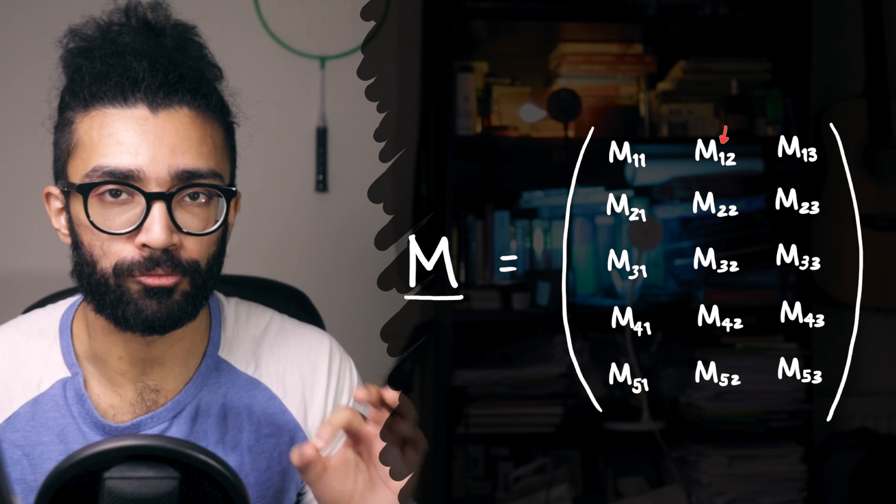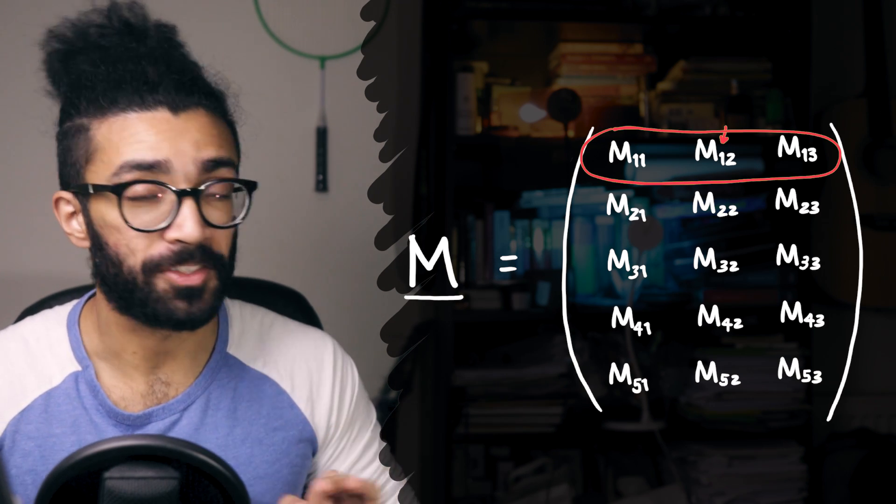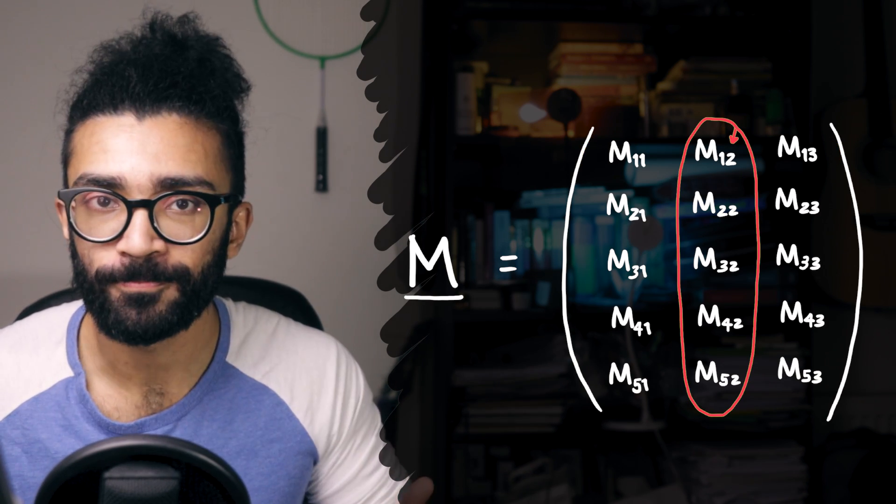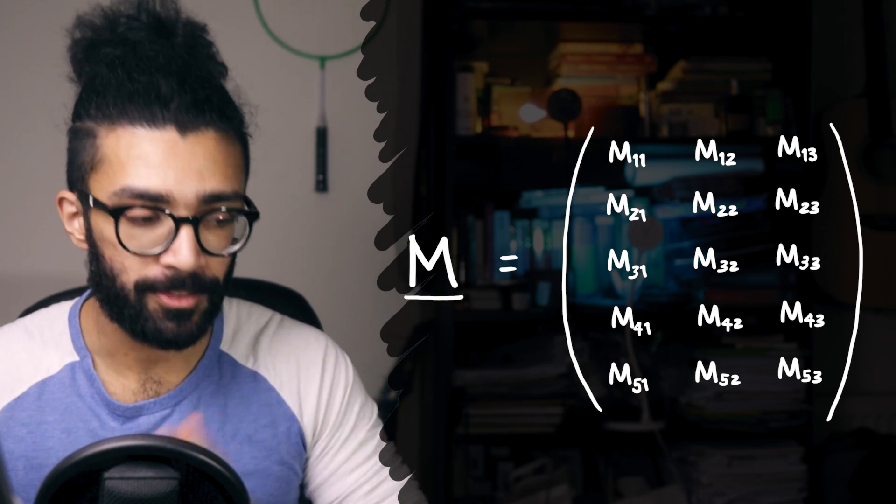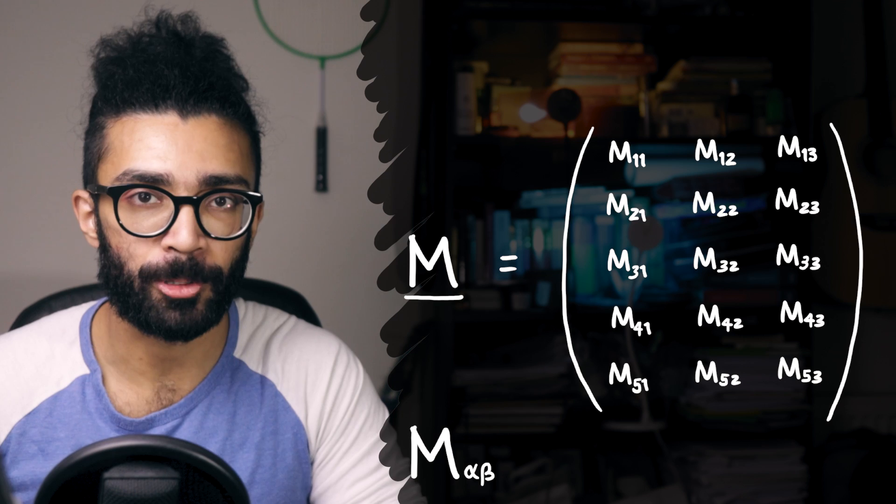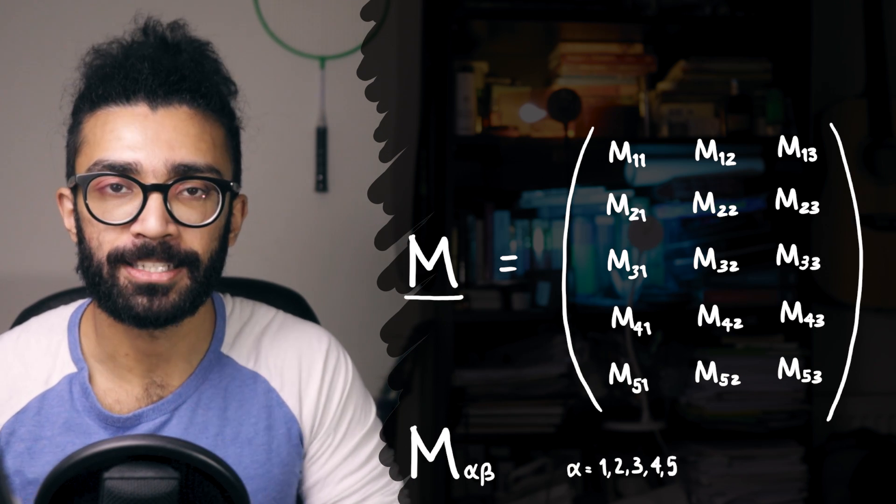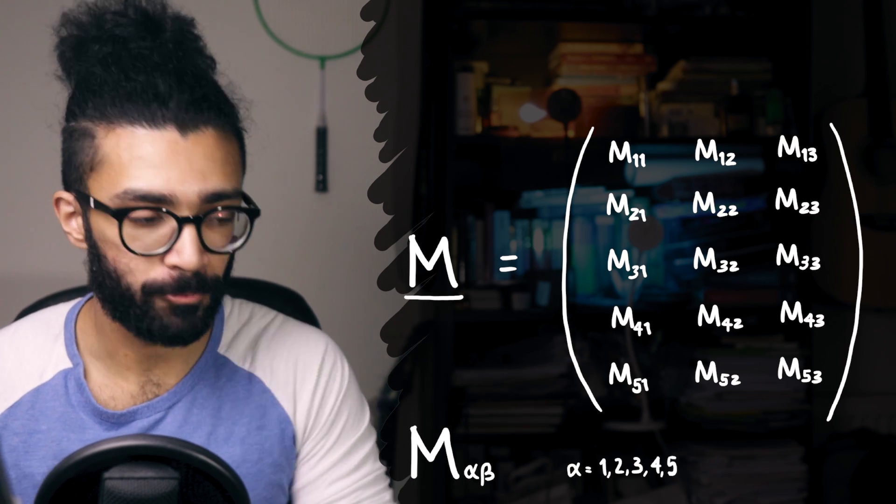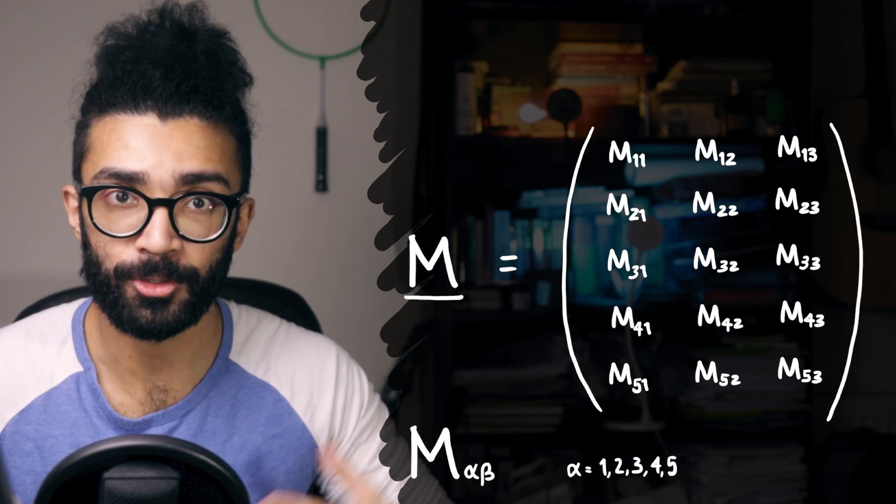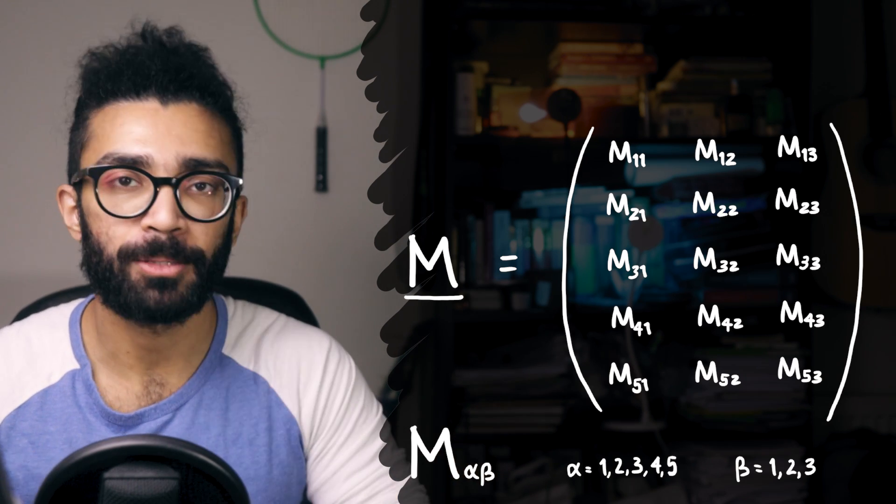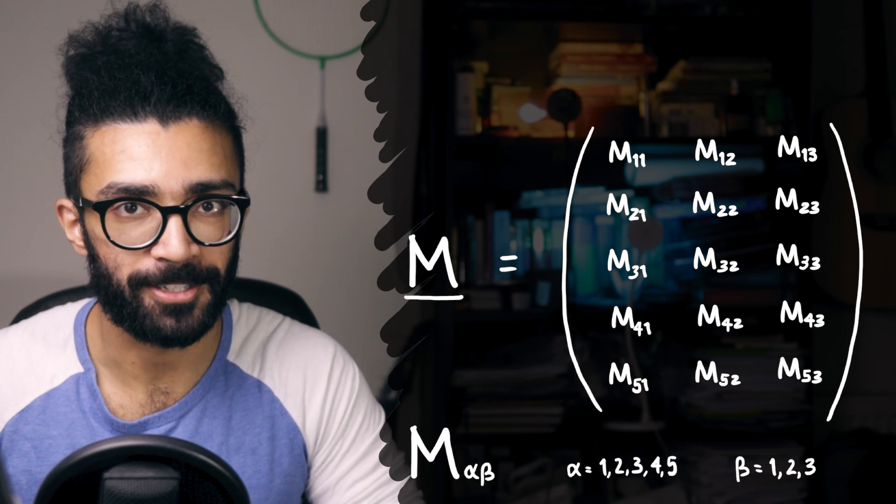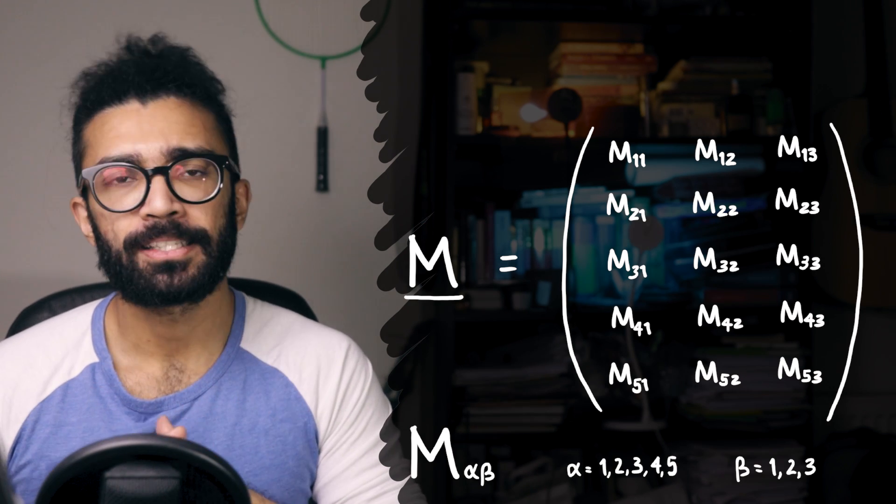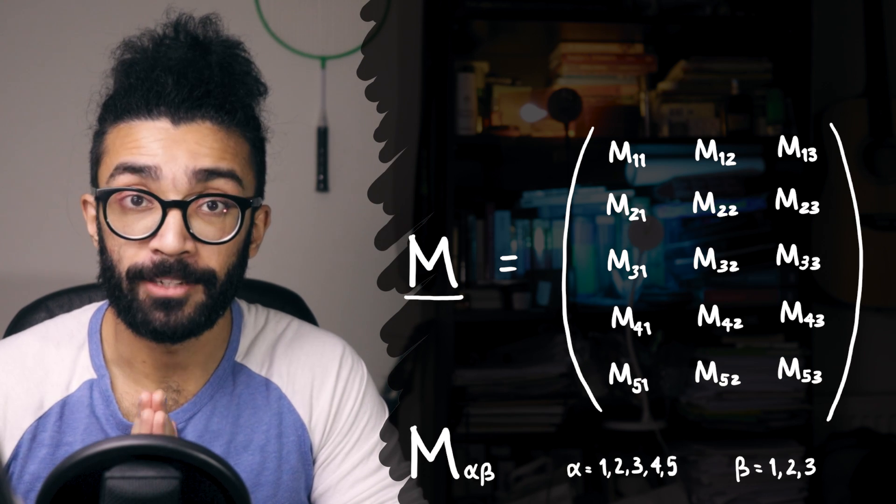The first number in the subscript refers to which row in our matrix we're looking at, and the second number refers to which column. And if we want to talk about a generic matrix element, one of the matrix elements in this matrix, we could call it M subscript alpha beta, where alpha can take the values from one to five, representing bags one to five, or rows one to five, and beta can be between one and three. So apples one to three, or columns one to three.